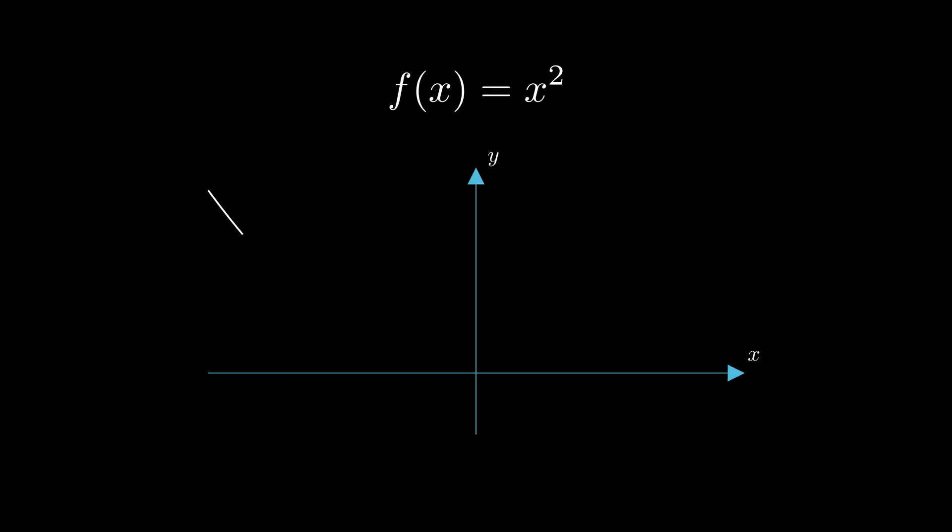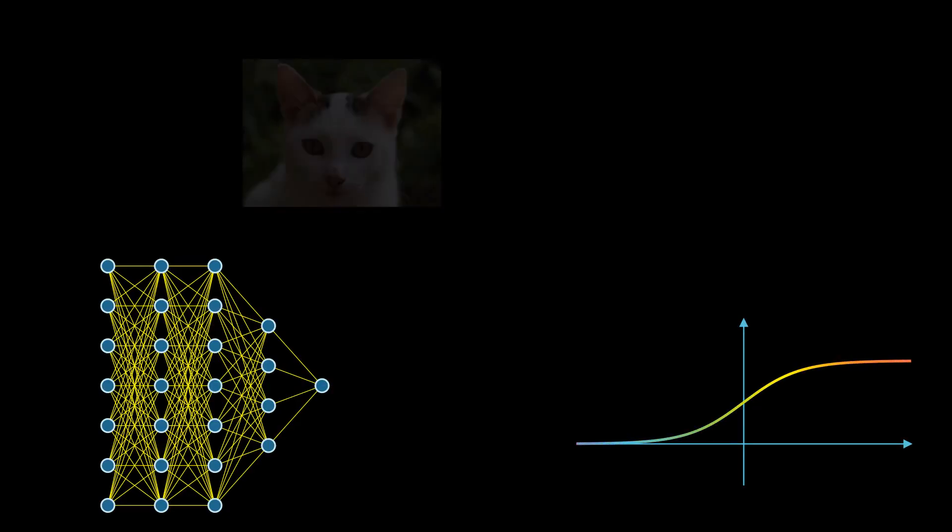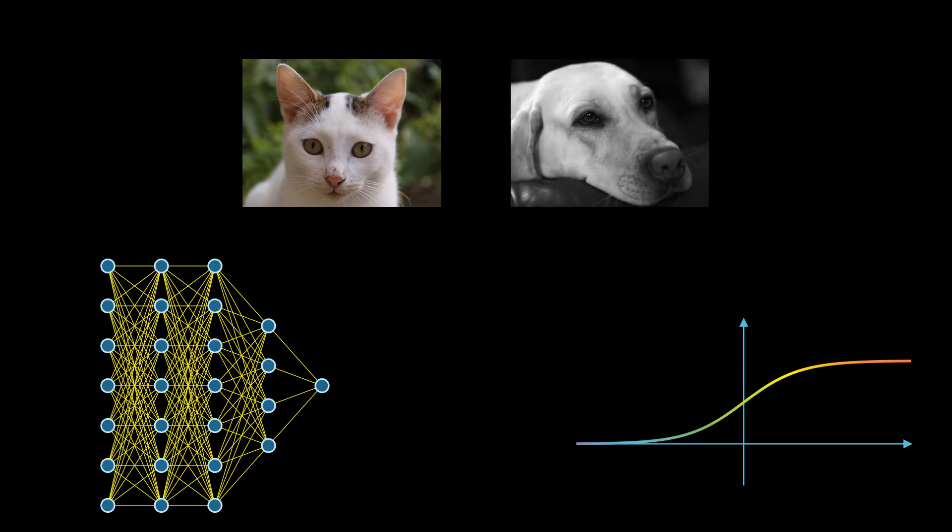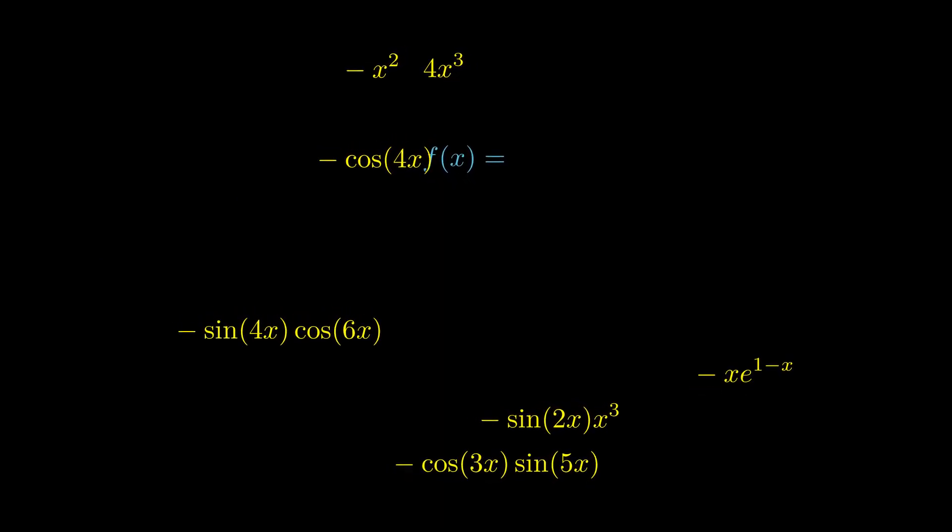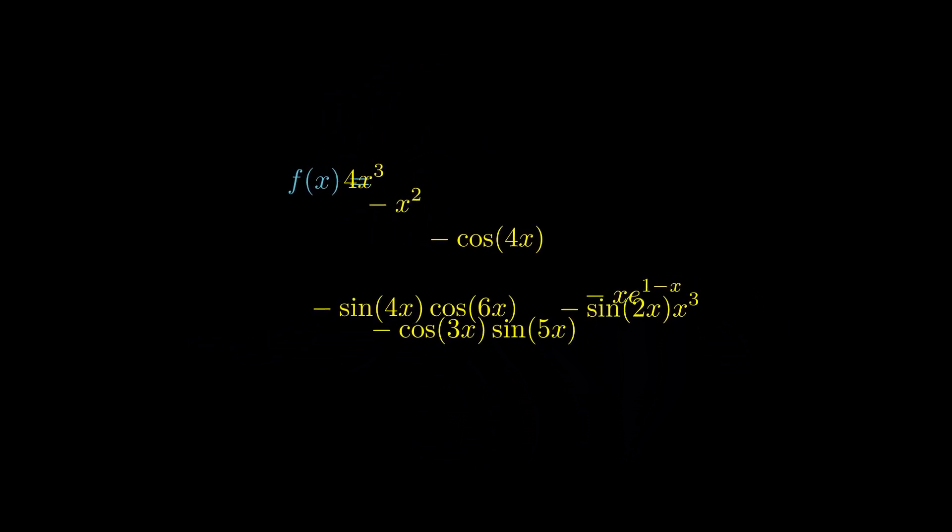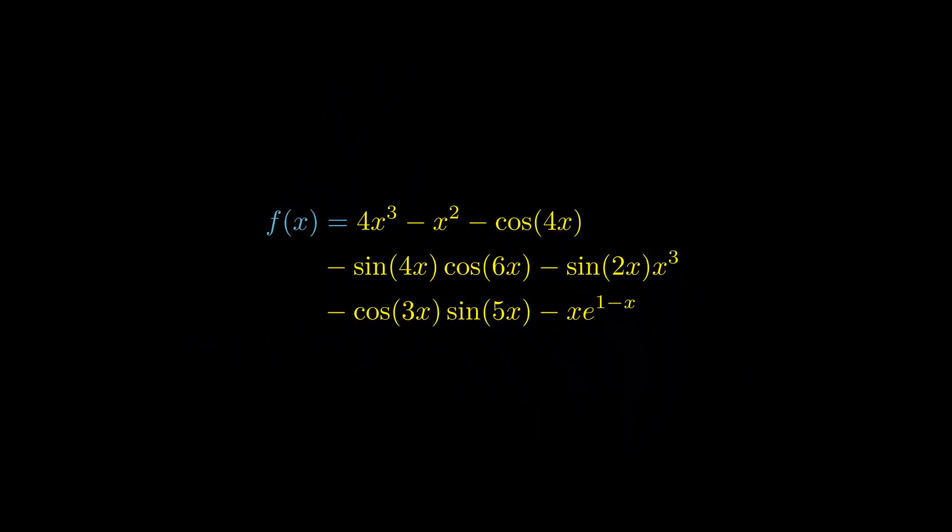If there was one thing that every machine learning practitioner had to know, it would be how to minimize a function. Whether you are training a neural network, solving logistic regression, or simply trying to teach a computer how to tell a cat from a dog, chances are, after a lot of really complex-looking math, your task will boil down to minimizing one gigantic function.